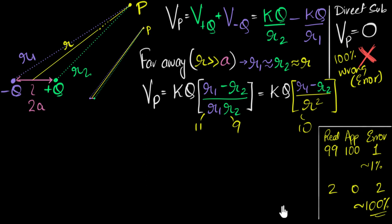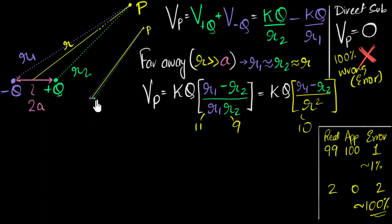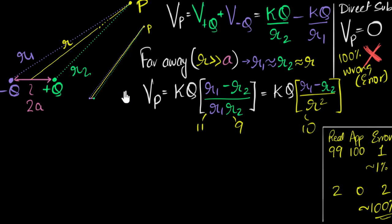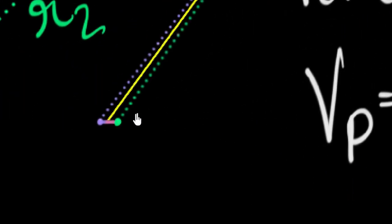So we need to find the difference r1 − r2 under the condition that they're almost equal. The way to do it: zoom in close to the dipole on the real picture. When point P is very far away, all three lines — r, r1, and r2 — look parallel to each other, and that's the key insight we're going to use.